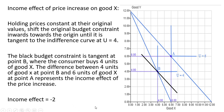The black budget constraint is tangent at point b, where the consumer buys 4 units of good x. The difference between 4 units of good x at point b and point a represents the income effect of the price increase. So the income effect here is minus 2. You'll notice that the total effect and income effect are the same, and the reason for that is that the substitution effect when dealing with perfect complements is going to be 0.